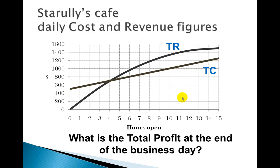Then I've got total profit. Profit is the difference between revenue and cost. When revenue is bigger than cost, like on the right-hand side here, I'm making money — that's a profit. And you could have a negative profit, basically losing money, on the left-hand side. Looking at the end of the business day, I'm looking at the vertical distance between revenue and cost graphs, and I'm estimating around $250. So that would be my profit for the end of the business day.